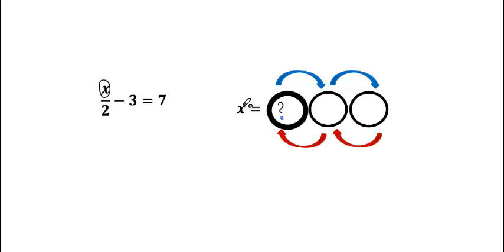We can go from the x that we don't know, and we can divide by 2. Then, still following the order of operations, we need it to divide first. Next, we will subtract 3. And this will get us to the other side of the equal sign, 7.